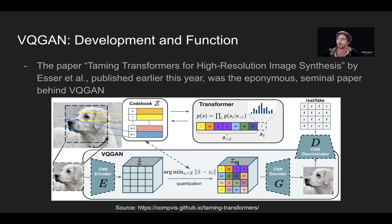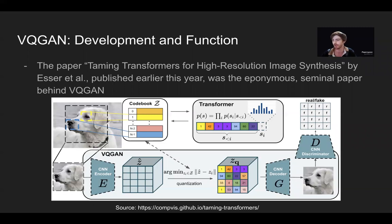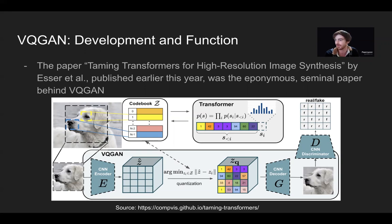VQGAN was first introduced in the paper "Taming Transformers for High-Resolution Image Synthesis" by Esser et al. earlier this year. They made it with the intention of improving what they perceived to be the flaws of other image synthesis frameworks, like the more transformer-convolutional approaches, and sought to surpass those capabilities by creating their own two-stage approach. There had been prior implementations like variational autoencoder GAN, but they were able to create a network that outperformed those, or at least performed up to par. We can see in this image how the VQGAN actually does that — it takes it into this codebook, much like we saw with the vector quantized VAE.